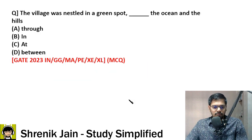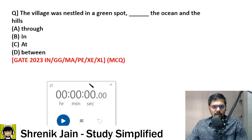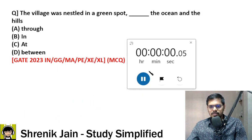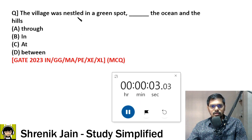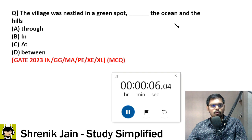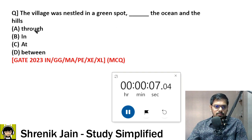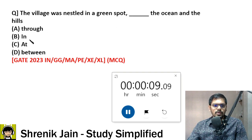The first question is now in front of the screen. I will give you 30 seconds. Very easy question: 'The village was nestled in a green spot, dash the ocean and the hills.' Option A: through. Option B: in. Option C: at. Option D: between.